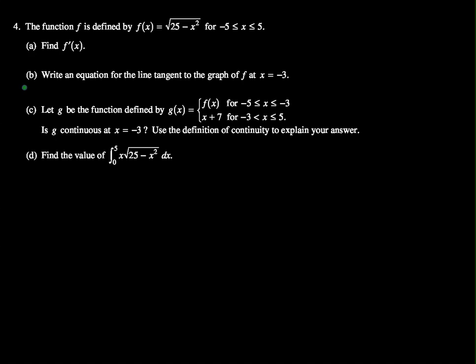All right, part c says let g be the function defined by g of x equals f of x for all x between negative 5 and negative 3 inclusive, and x plus 7 for negative 3 less than x less than 5. Is g continuous at x equals negative 3? Use the definition of continuity to explain your answer.